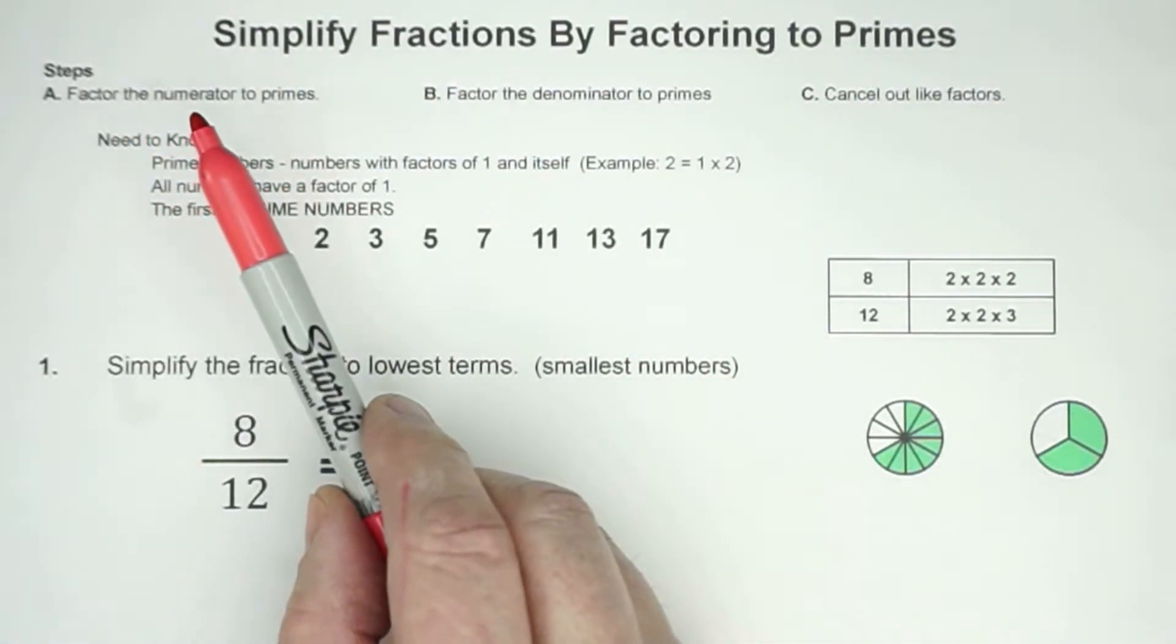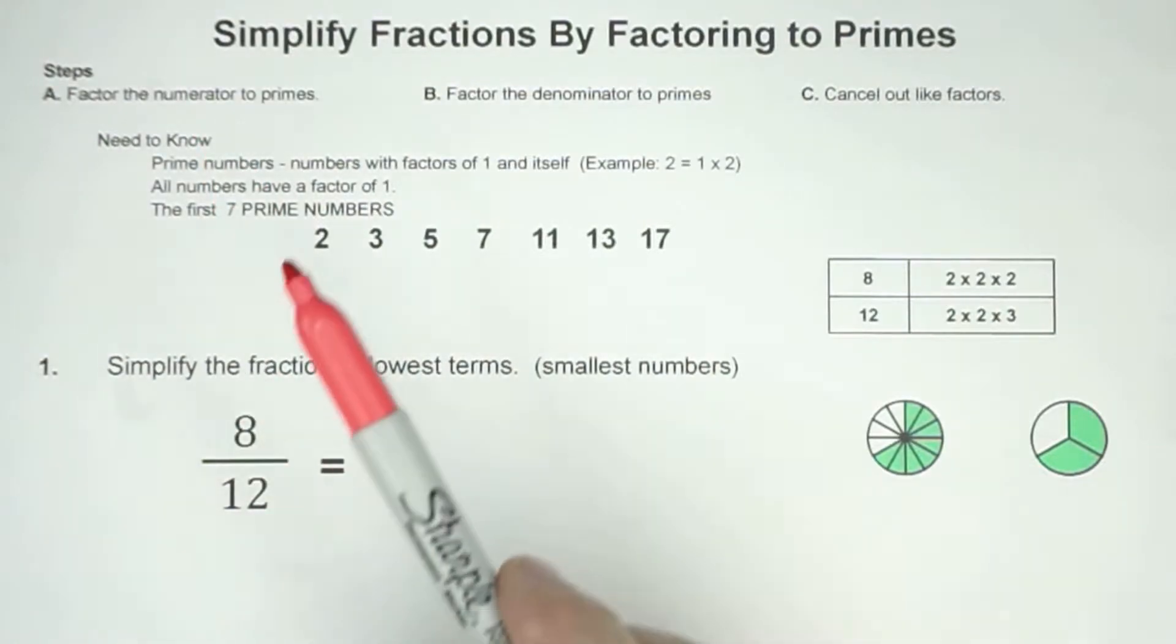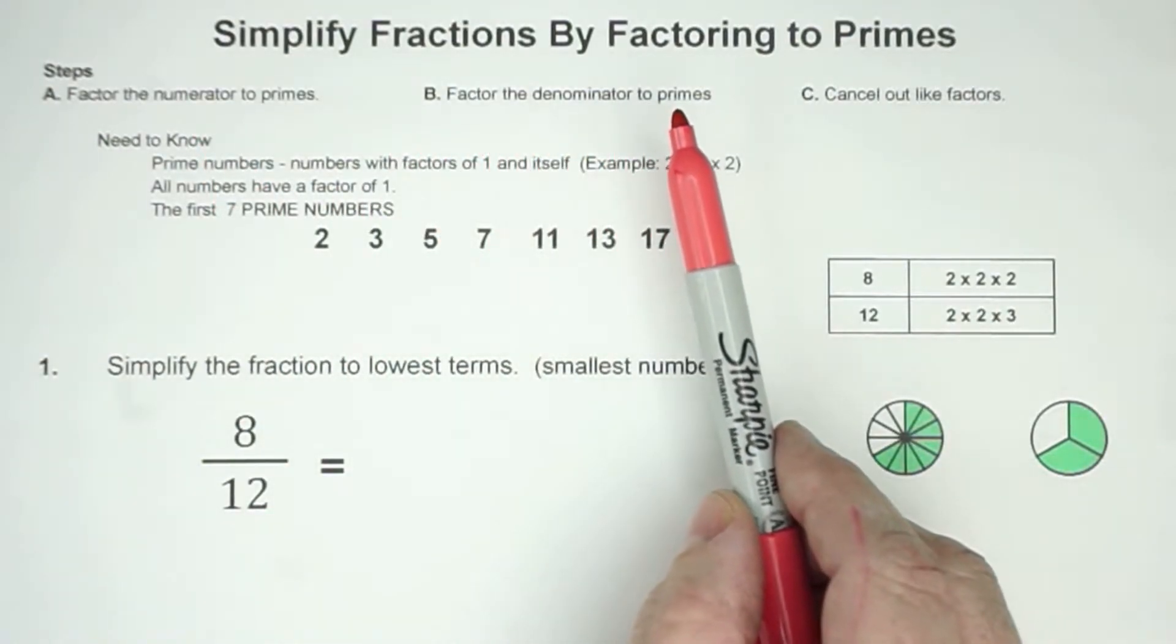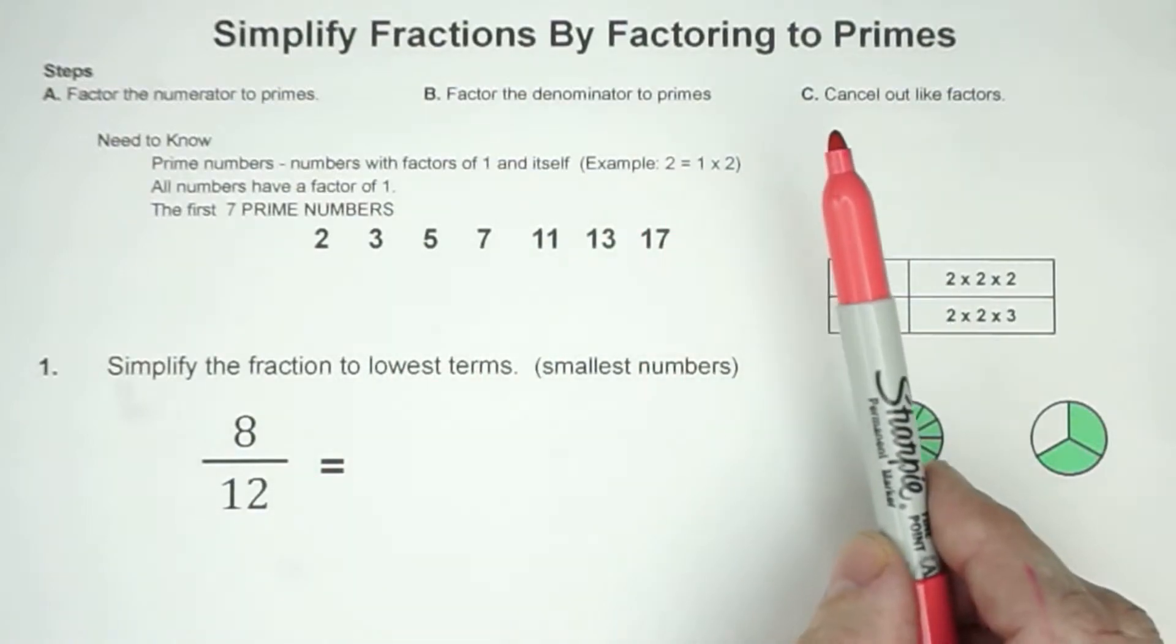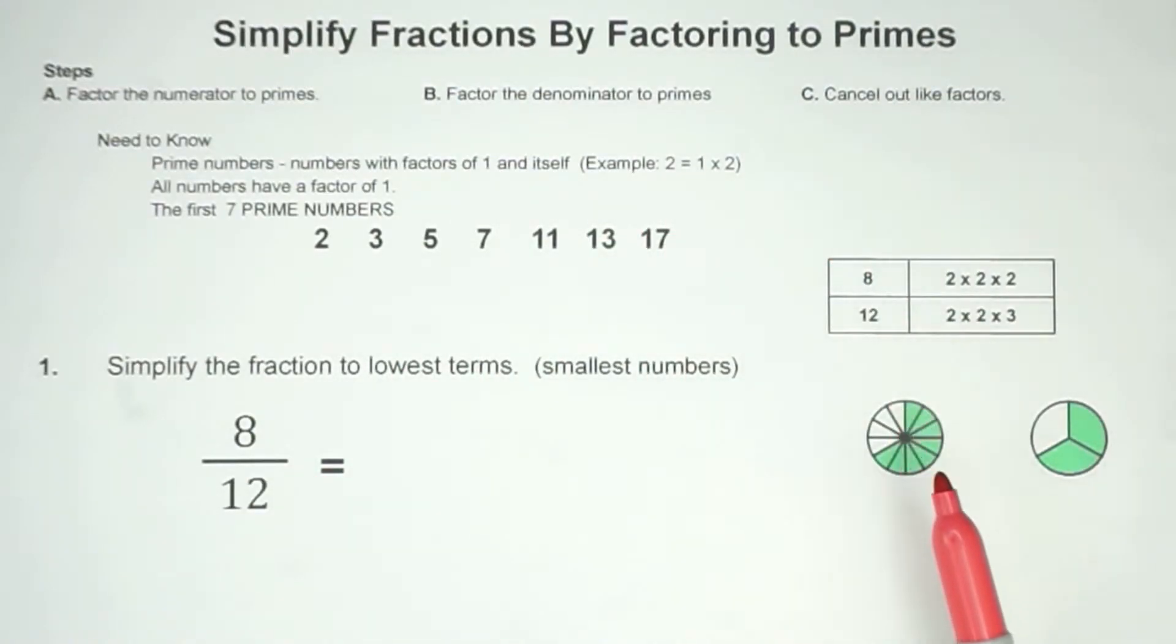So our steps today is that we're going to factor the numerator, which is the top number. Then we're going to factor the denominator to primes, which is the bottom. Then we're going to cancel out the factors, and we'll show it on the models also. Let's just jump right in. Simplify the fractions to lowest terms, and today we're going to be using factoring.